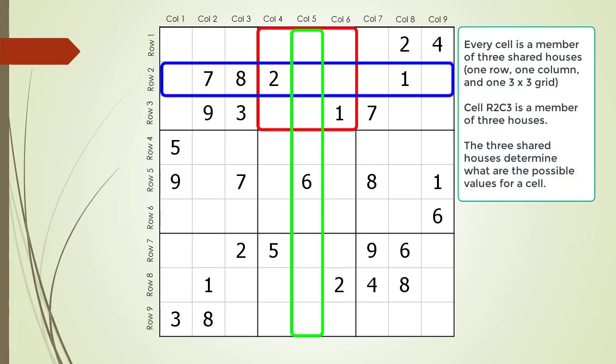Every cell in the Sudoku puzzle is shared by three houses: one row, one column, and one 3x3 block. For cell 2,5, the three shared houses are outlined. The house making up the row is highlighted in blue, the column in green, and the block in red. What numbers we can possibly choose for cell 2,5 are determined by the numbers occurring in these three shared houses.